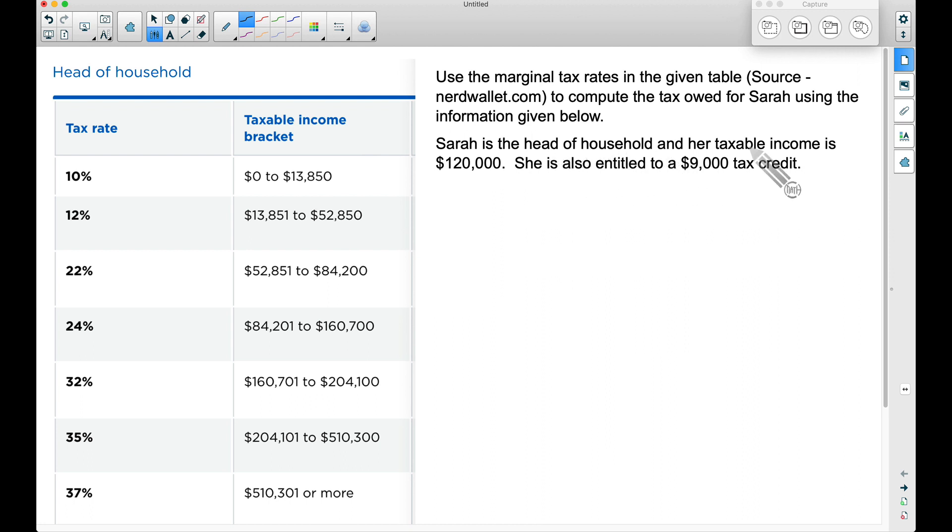She is head of household and her taxable income is $120,000. She is also entitled to a $9,000 tax credit. Since this amount, $120,000, is her taxable income, all deductions and/or exemptions have been taken away from her gross income to find her taxable income. You've got to keep those words in mind.